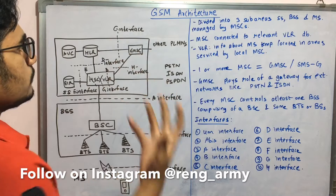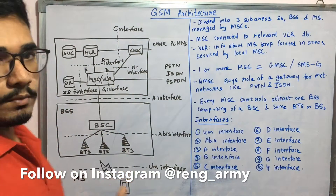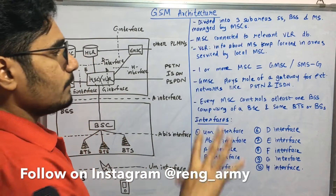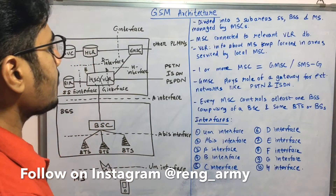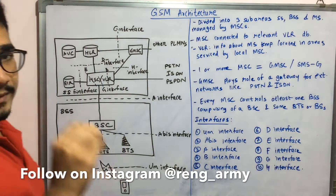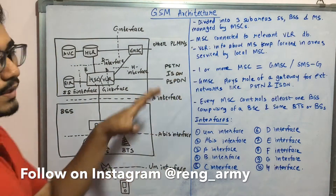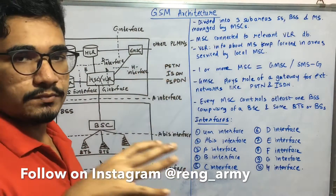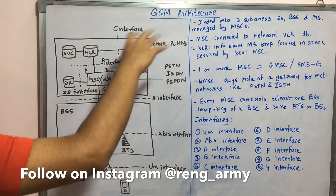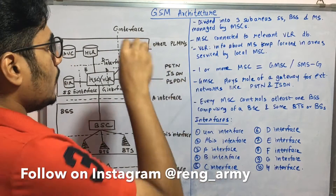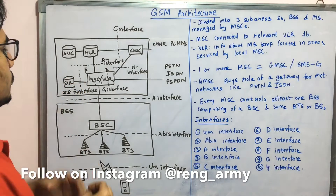You also have the GMSE — the Gateway Mobile Switching Center — which is also called the SMSG, the SMS Gateway. One or more MSCs will connect to the GMSE, also called the Short Messaging Service Gateway. The GMSE basically plays the role of a gateway for external networks such as the Public Switched Telephone Network (PSTN), ISDN, and PSPDNs.